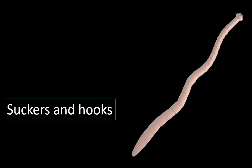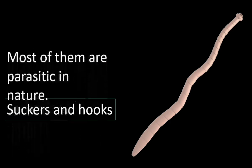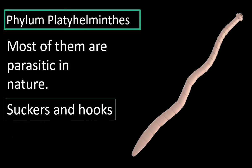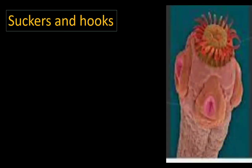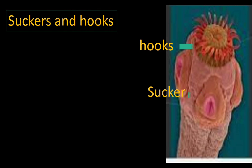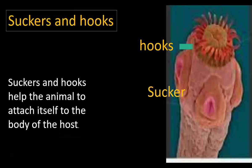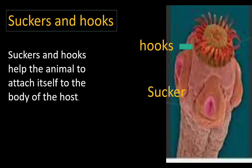They are acoelomates because they do not have a body cavity. Tapeworm is another example. Animals belonging to the phylum Platyhelminthes have suckers and hooks for attachment. These animals are parasites — organisms which live on another organism — and they use the suckers and hooks for attachment to the host. The anterior end of the tapeworm shows hooks and suckers. Human beings are the host for the tapeworm.